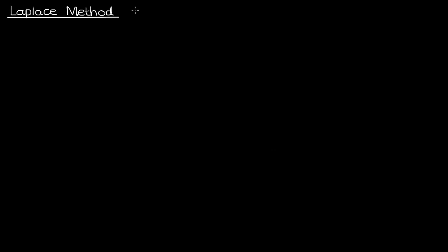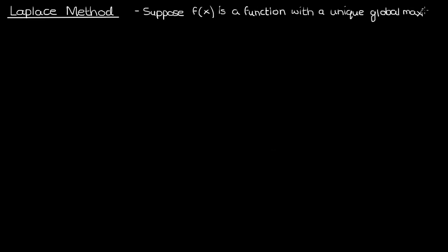I won't prove Laplace's method, but I'll give you an idea of how it works. Suppose I have a function f of x with a unique global maximum at x0. At x0, the function f of x takes on its highest possible value — there's no other value of f of x that's greater. That's what I mean by global maximum. Another way of saying this is that f of x0 is greater than f of x for all x aside from x0.